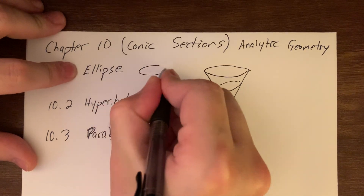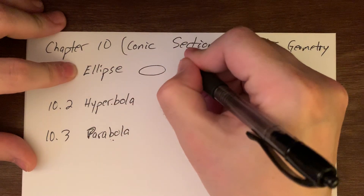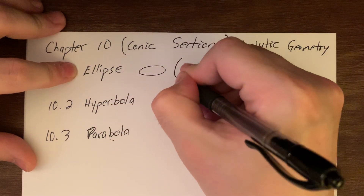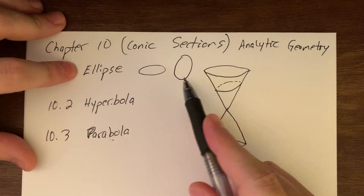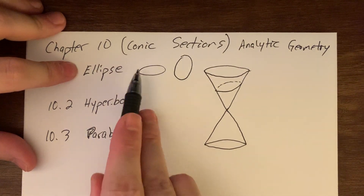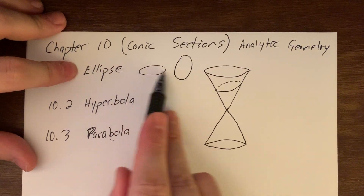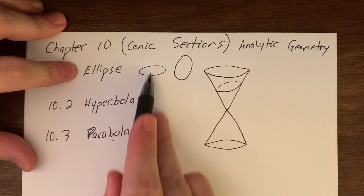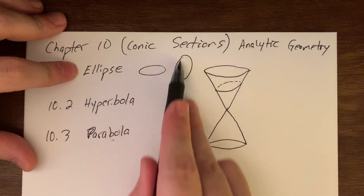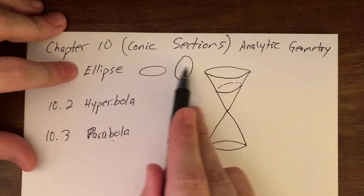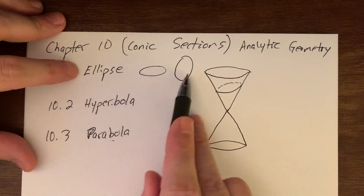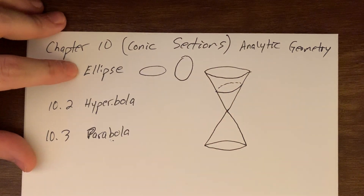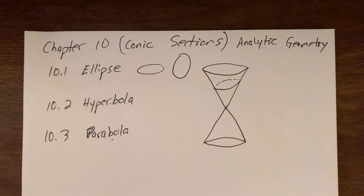Ellipses have more of an oval-ish shape — a little more left-right and skinnier in the up-down, or opening more in the up-down and skinnier in the left-right. These will basically be our two different pictures when we're thinking about an ellipse.